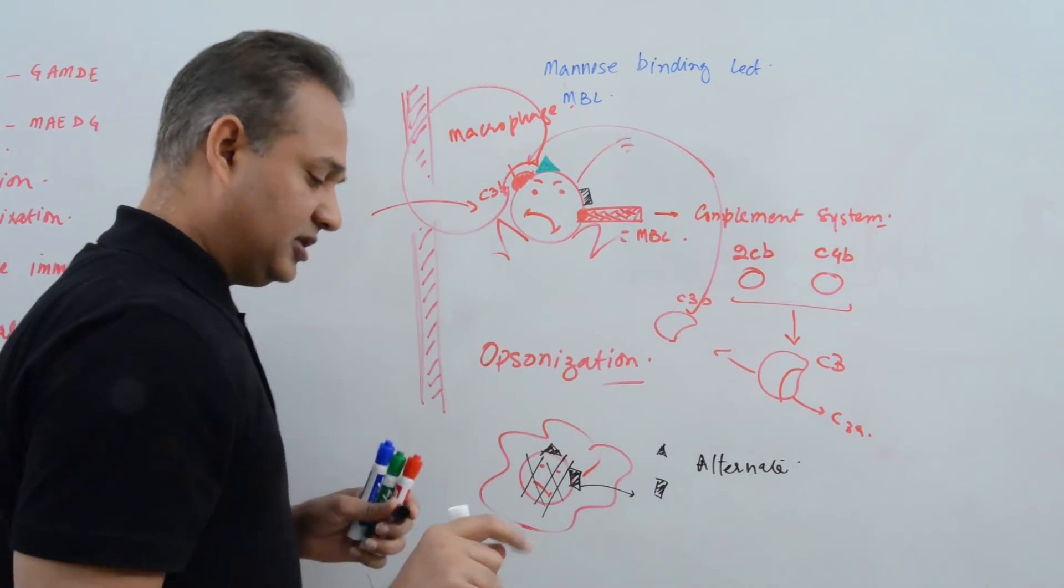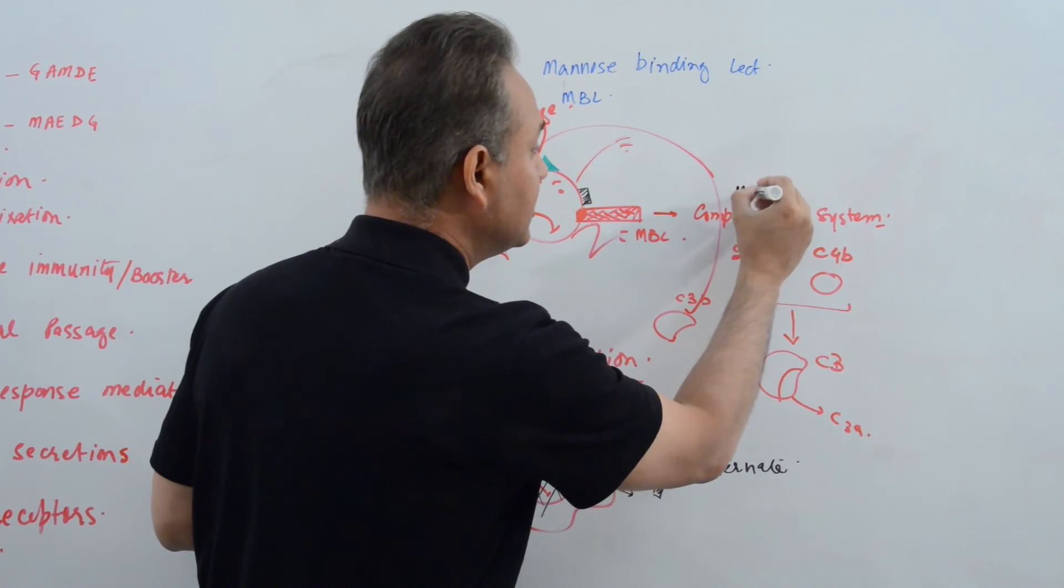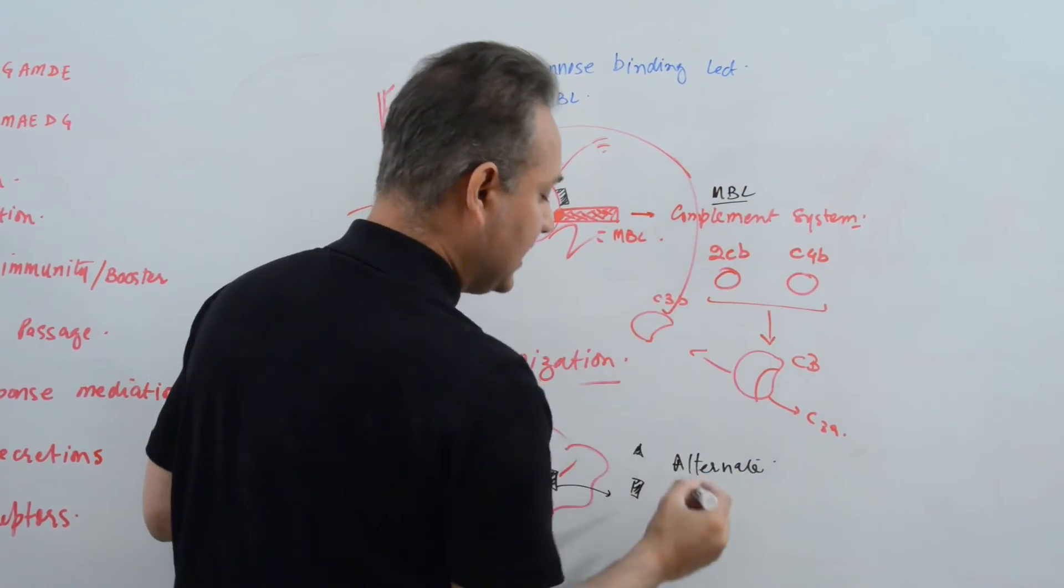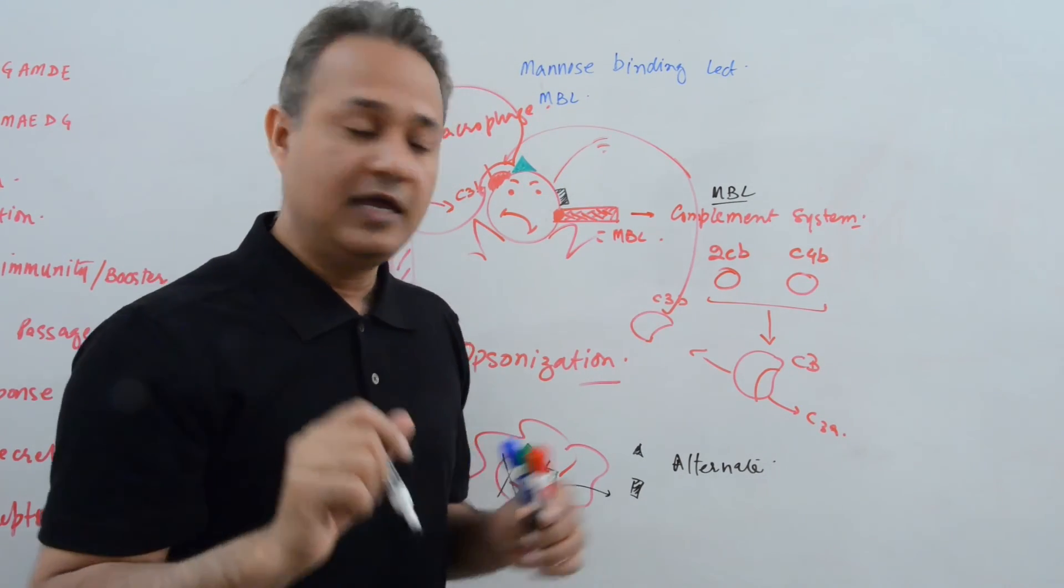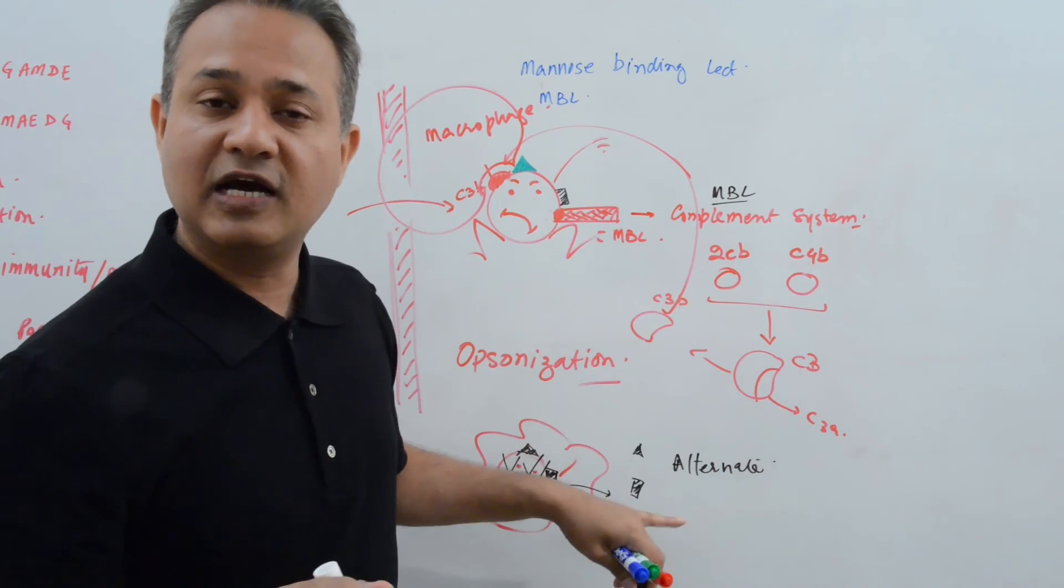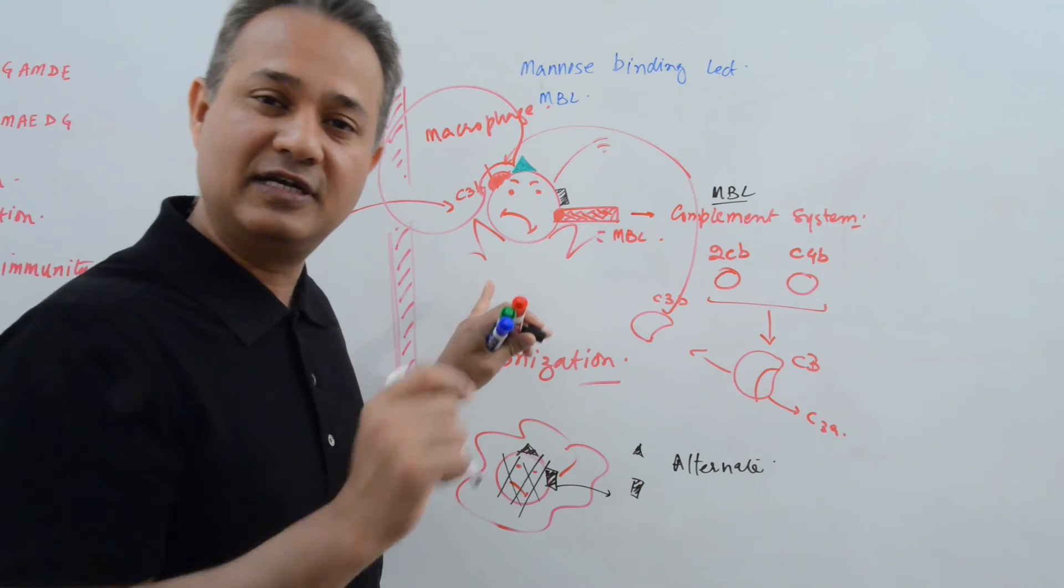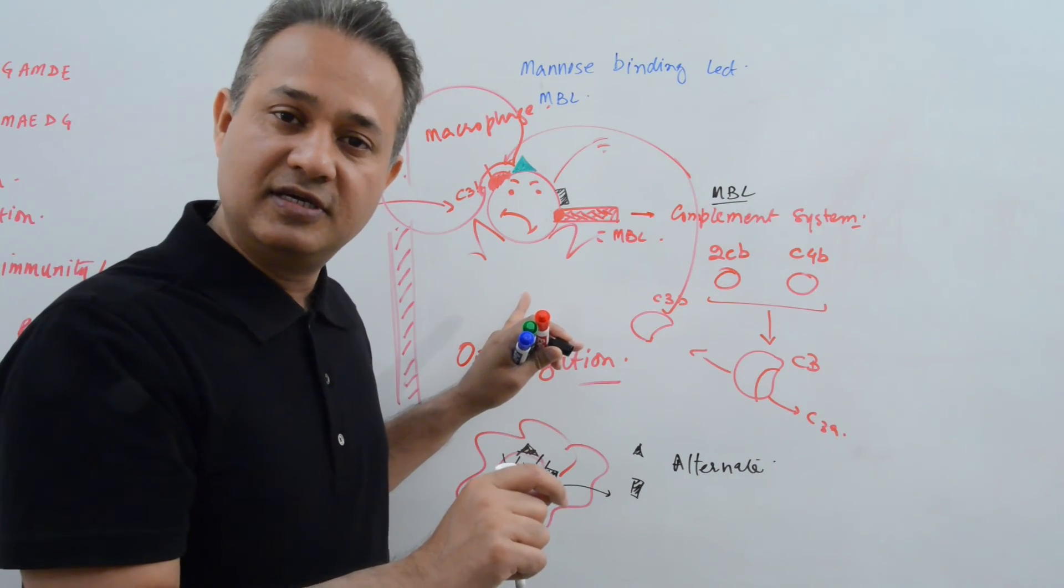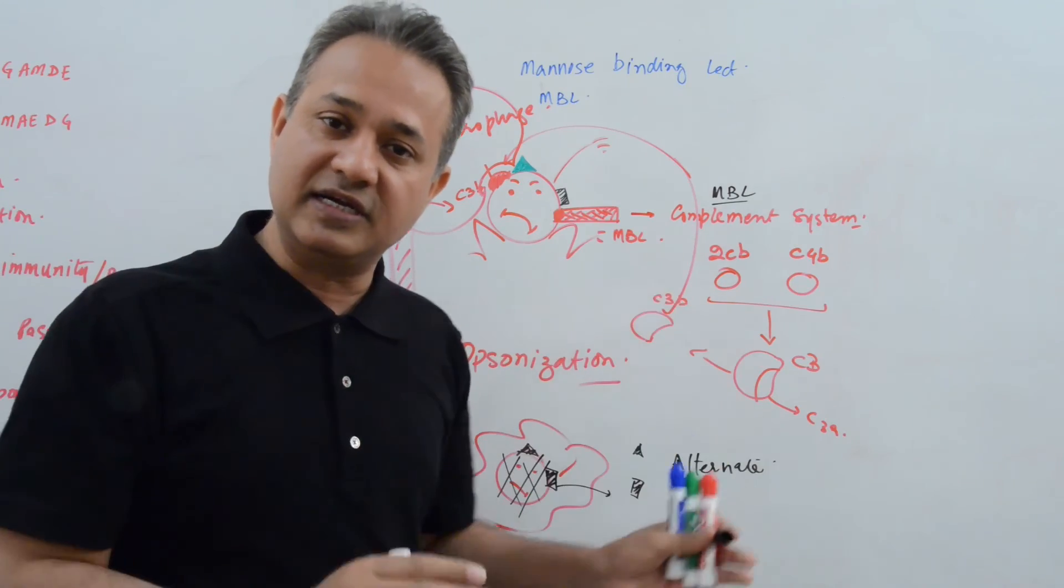Now remember this, in complement, mannose binding pathway and alternate pathway are part of innate arm of immune system. Why? Because these both systems become active without recognizing what the pathogen is, what type of pathogen it is. They don't need recognition. They do not need memory to be attacking it.